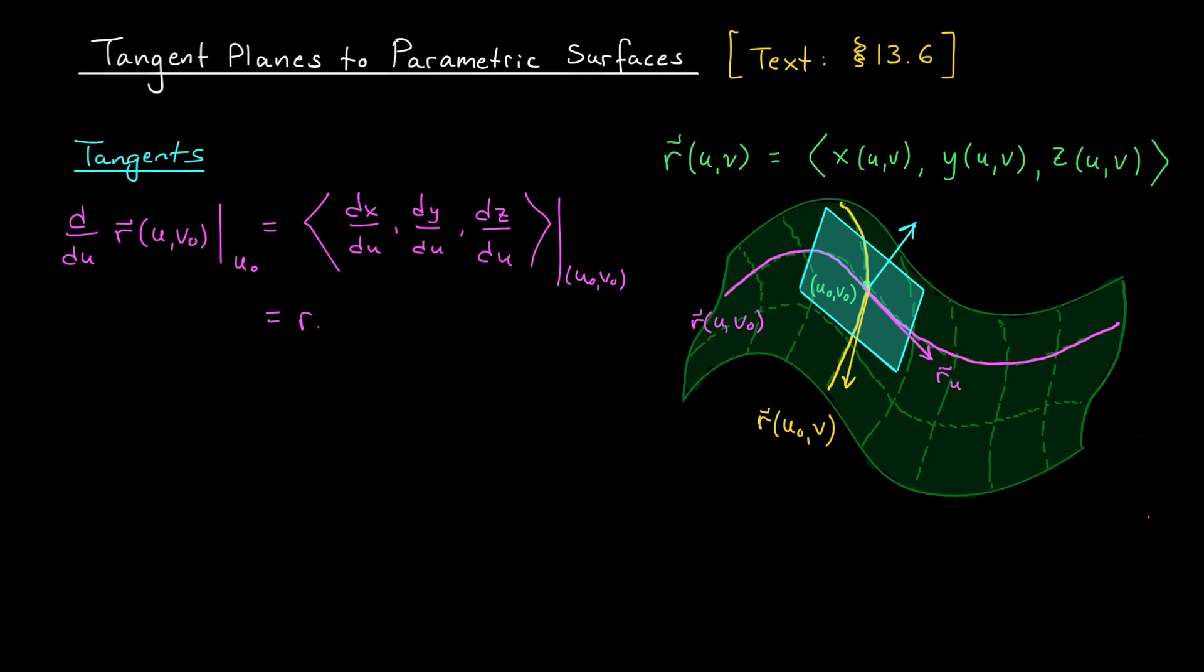To find the other tangent vector, we do the same thing, except now we're going to be differentiating with respect to v. So my second tangent vector is dr of u0 v with respect to v, which is dx by dv, dy by dv, dz by dv, and I'm going to evaluate the whole thing at u0 v0. We'll call that vector r v.